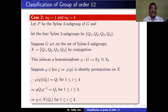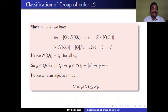Suppose g belongs to the kernel of φ. That means φ(g) is the identity permutation on X, so gQᵢg⁻¹ = Qᵢ for 1 ≤ i ≤ 4. Since N3 = 4, in the proof of the Sylow theorem we have N3 = [G : N(Qᵢ)], so 4 = |G| / |N(Qᵢ)|. Therefore |N(Qᵢ)| = 12/4 = 3 = |Qᵢ|.